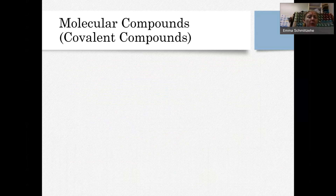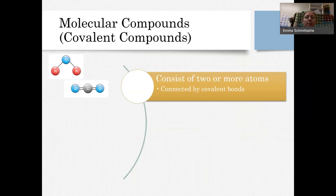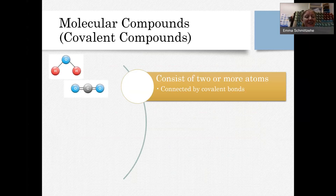Now let's look at covalent compounds, also called molecular compounds — those terms are the same thing and are used interchangeably. When you have a covalent compound, it consists of two or more atoms connected by covalent bonds. For example, in water (H2O), the hydrogen atoms are covalently bonded to oxygen, and in carbon dioxide, carbon atoms are bonded to oxygen atoms.